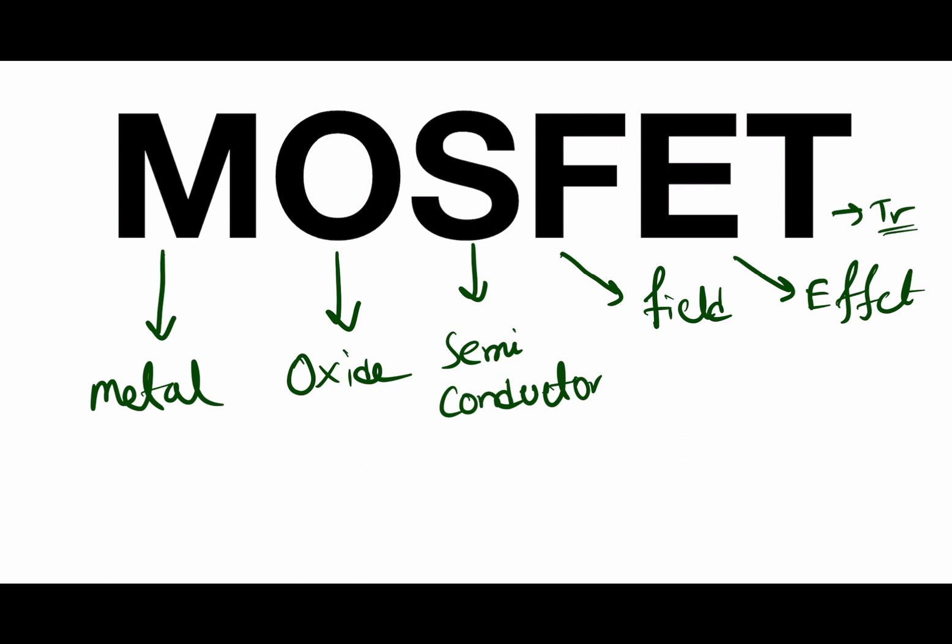I already have one video on field effect transistors, so if you haven't watched that yet, you can go to my channel and see that video. From the name, you can easily understand that MOSFET is a type of field effect transistor where we have an extra component — metal oxide — in the semiconductor.